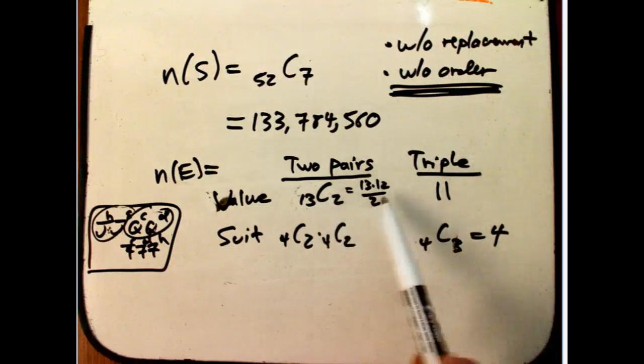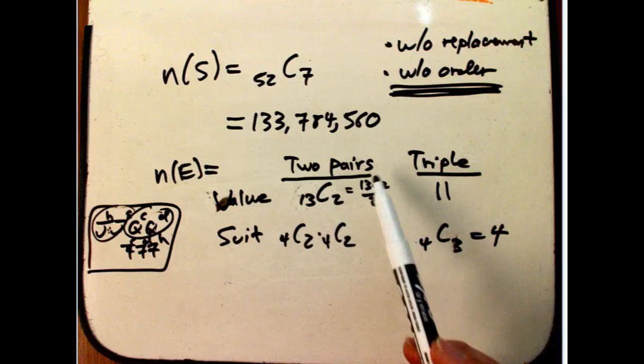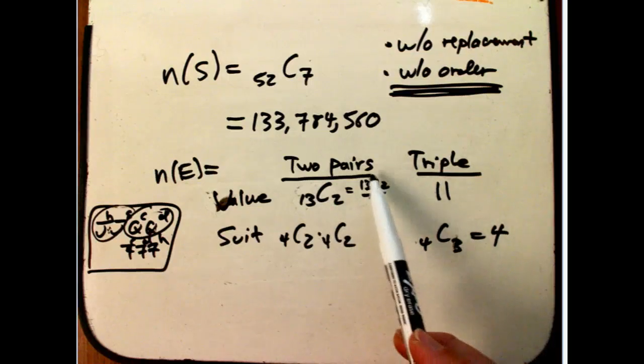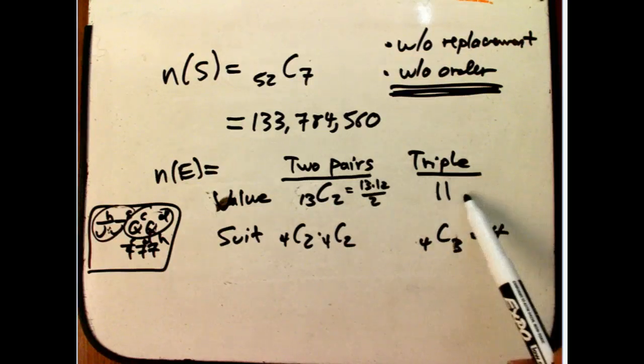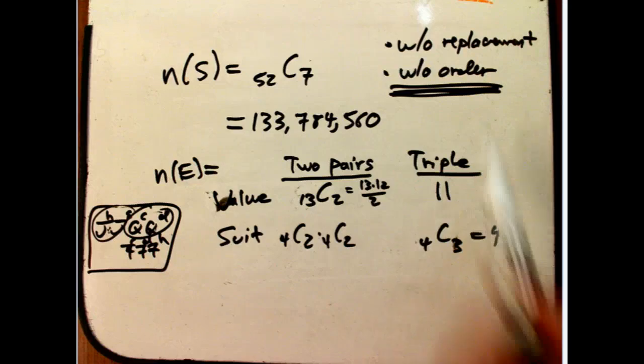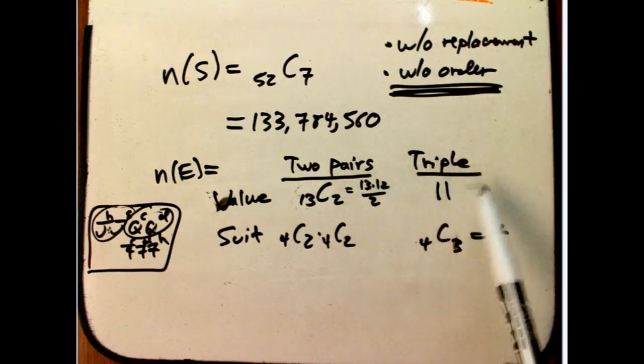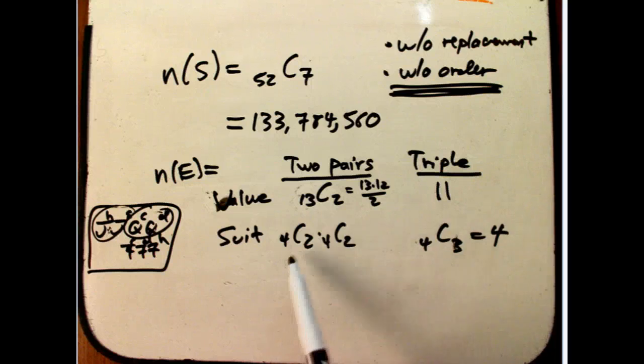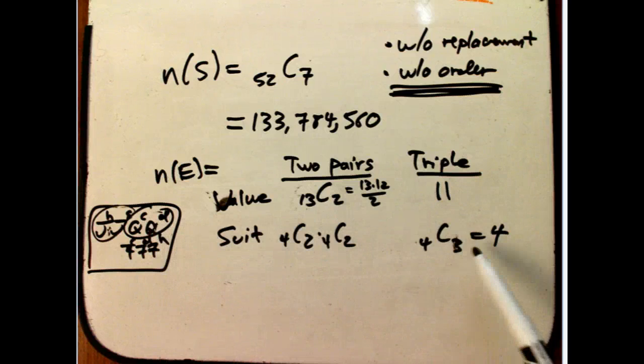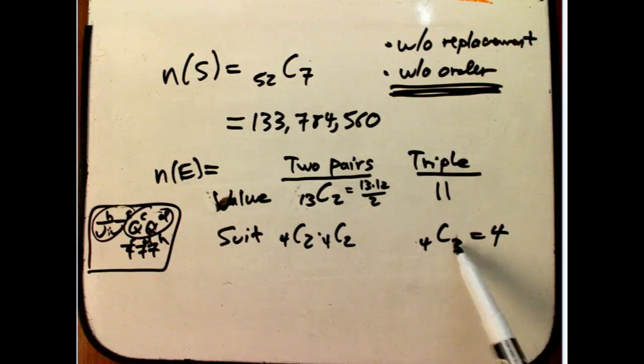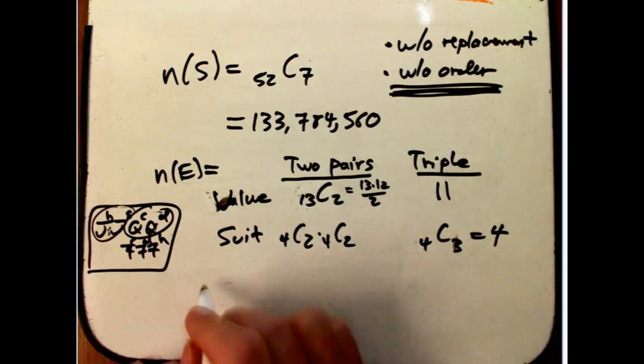So, that's all the information. The value for the two pairs, which is probably the trickiest thing. It's very analogous to the two pair calculation for a regular five card hand. Then there's the triple, the value for the triple. And notice the without replacement is what's saying 13, then 12, then 11, things like that. And then the suits for that pair, the jacks, the suits for this guy, and then the suits for the triple.